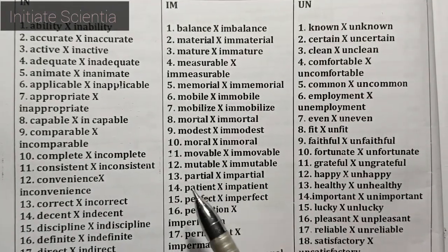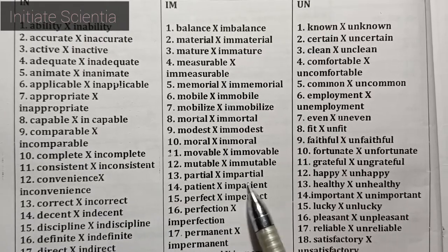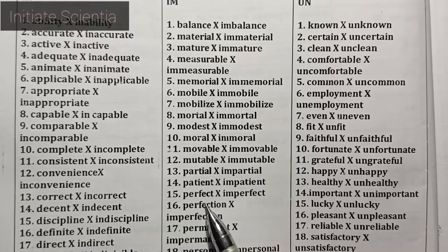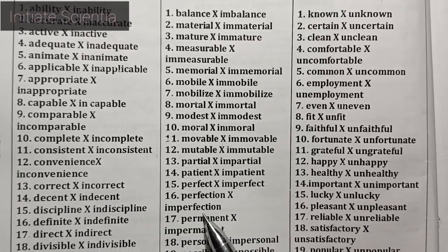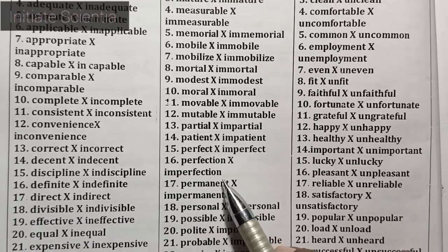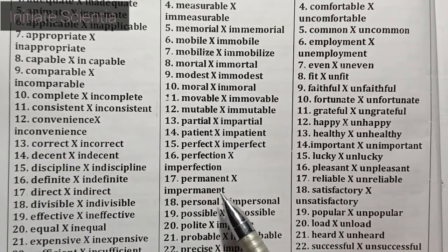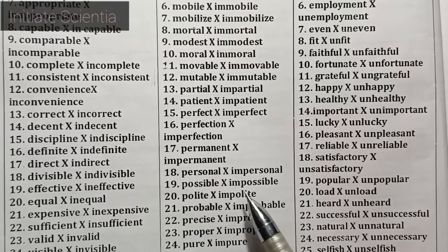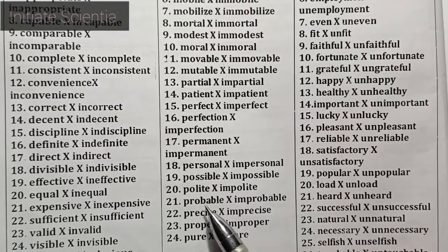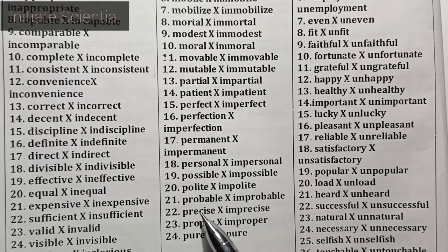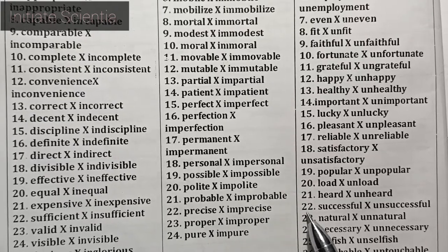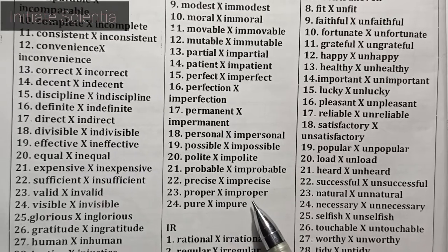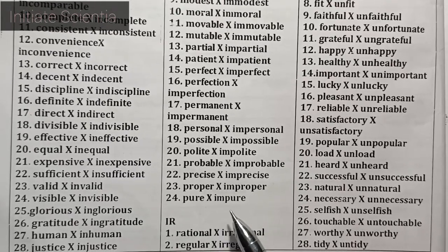Continuing IM prefix words: perfect – imperfect, perfection – imperfection, permanent – impermanent, personal – impersonal, possible – impossible, polite – impolite, probable – improbable, precise – imprecise, proper – improper, pure – impure.